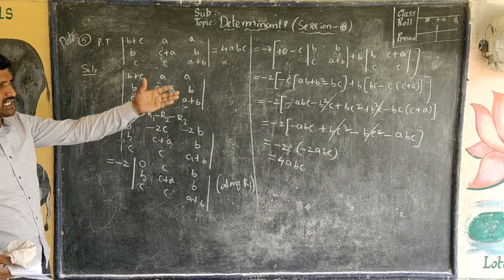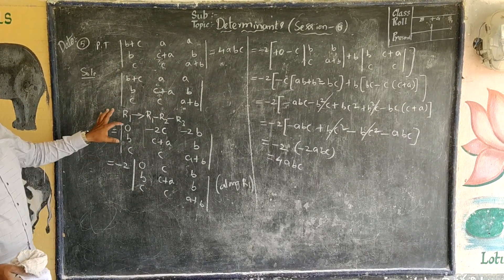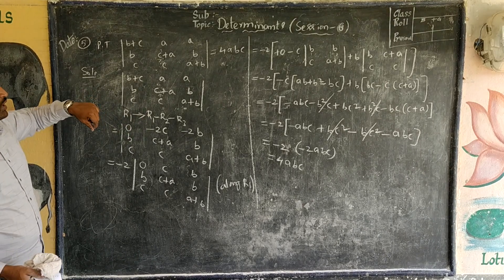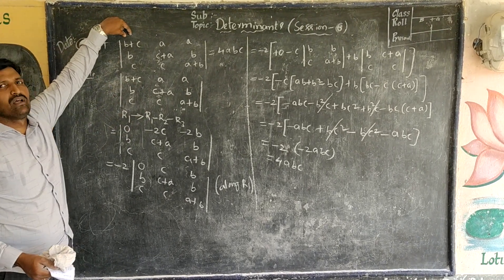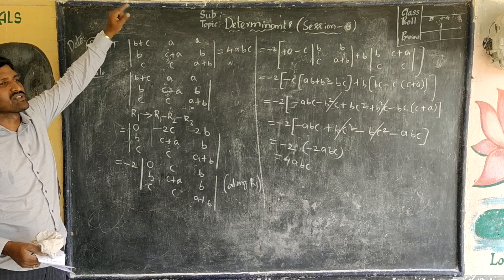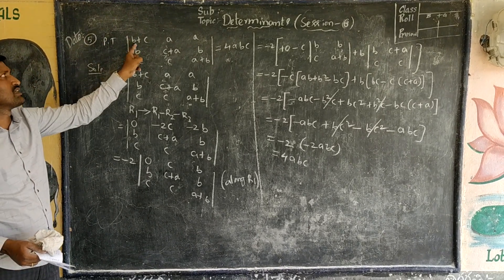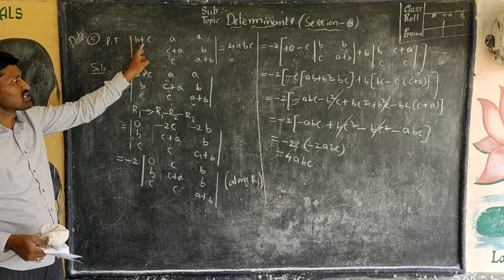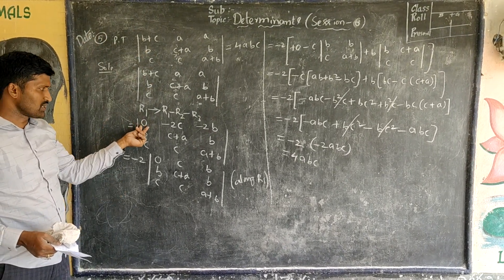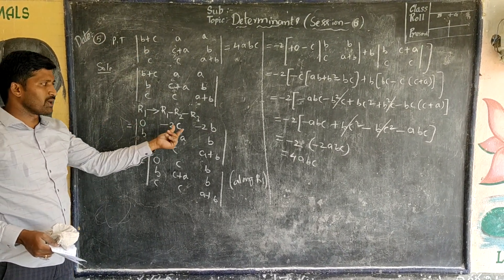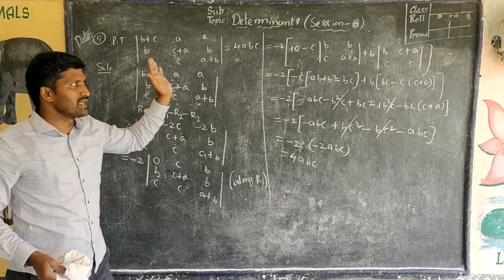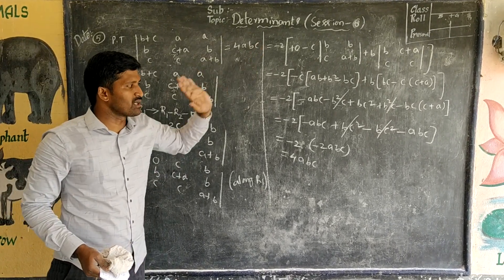So the final value is 4abc, which proves the result. The key strategy was: in row 1 there is a sum of two terms, so we subtract R2 and R3 from R1 to make the first element 0, then factor out minus 2 and expand along row 1.